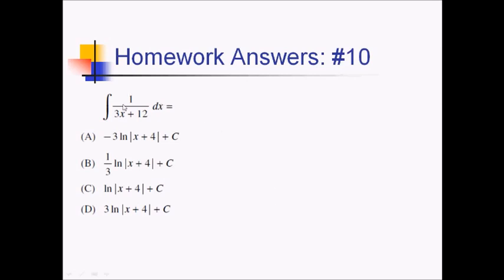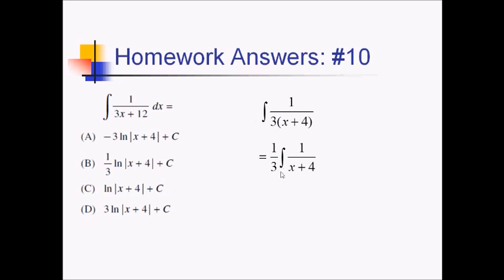On this problem, we want the antiderivative of 1 over 3x plus 12. This is a 1 over x kind of situation, so we're definitely going to want to use ln of absolute value of something. But the function down here is not just plain old x — this is 3x plus 12. We could take the ln of absolute value of this stuff and divide by that tail of 3, but that doesn't look like any of the answer choices; they all have ln of x plus 4 inside. If we factor a 3 out — so we'll have 3 times (x plus 4) — and then move a one-third outside the integral, now we can take the antiderivative of 1 over x plus 4, which is just ln of absolute value of x plus 4. We'll have a one-third out front, and of course plus c. So, that's going to leave us with answer choice B.